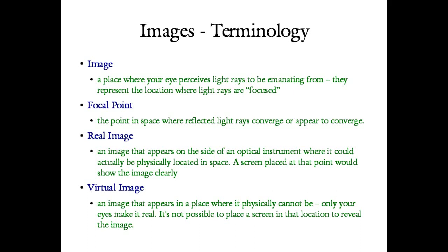This is to be contrasted with a real image. A real image from a mirror is one that appears on the side of the optical instrument where it could actually be physically located in space — and if you put a screen or camera at that point, you could show the image clearly. Real images from mirrors appear to be located on your side of the mirror. For lenses, real and virtual images are defined similarly, with some subtle differences we'll get to later.